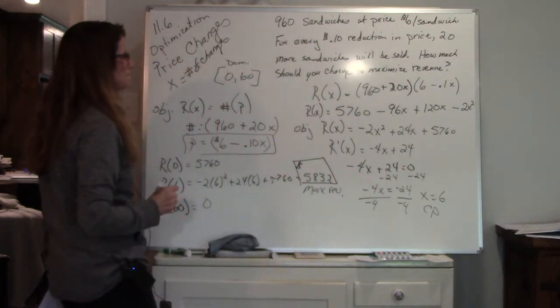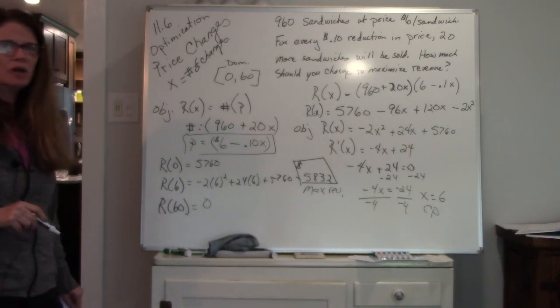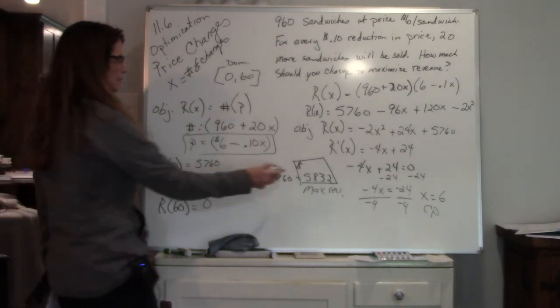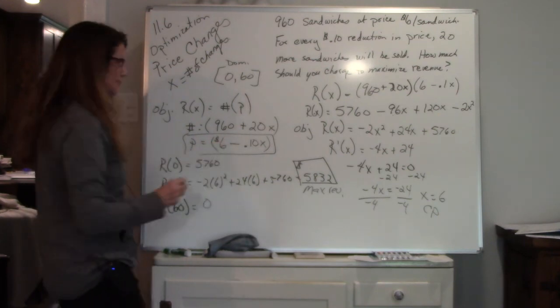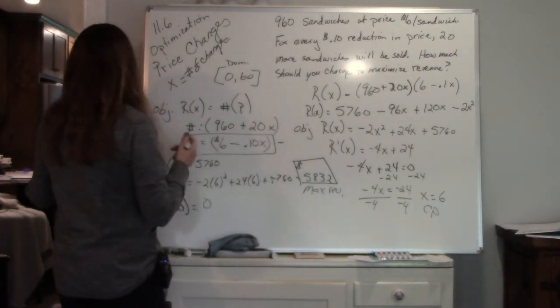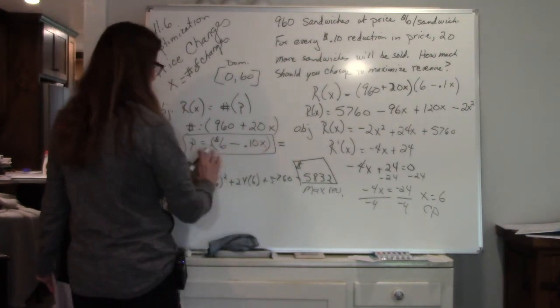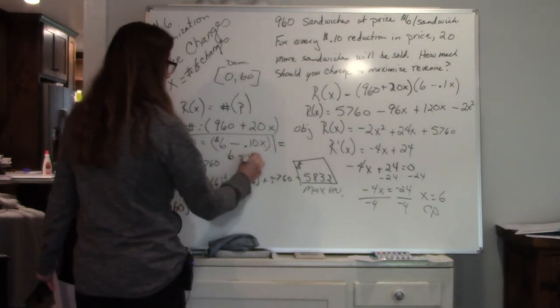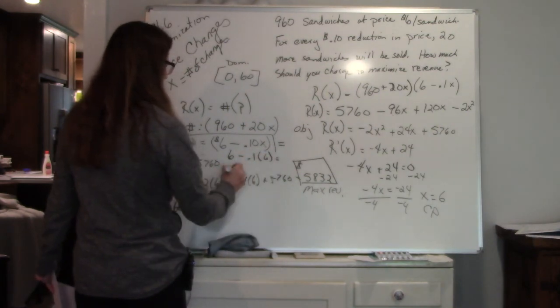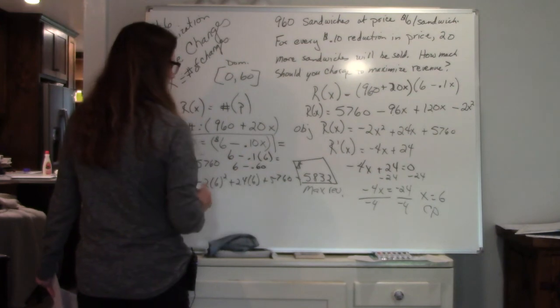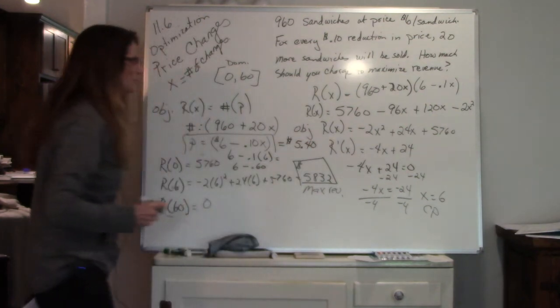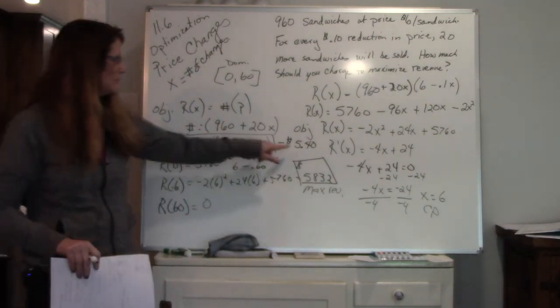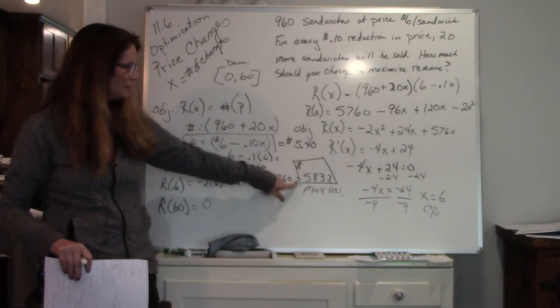The question said, how much should you charge to maximize revenue? So if this is my maximum revenue, that means I can do 6 price changes, and that will give me the best price. So 6 price changes is, 6 minus 0.1 times 6. So I have 6 minus 60 cents. So the perfect price is $5.40. That's going to make me have the highest revenue of 5,832.